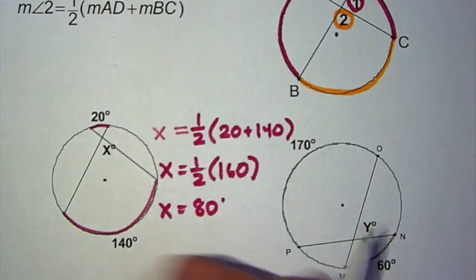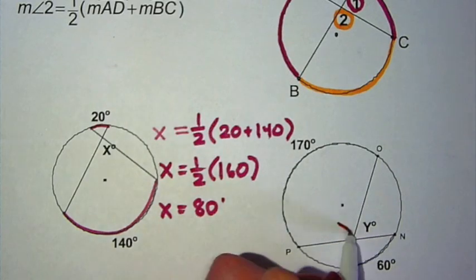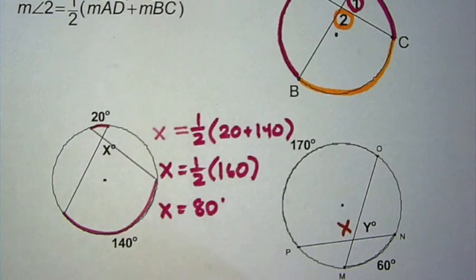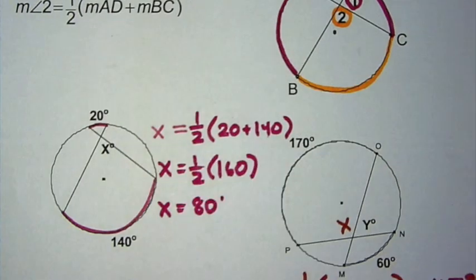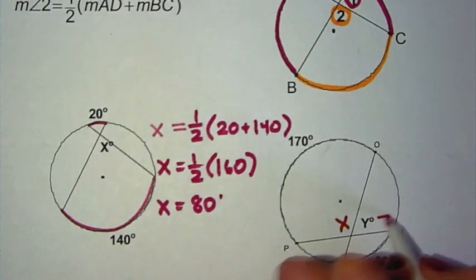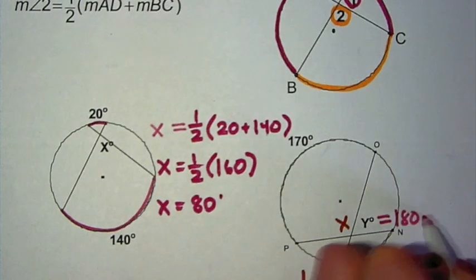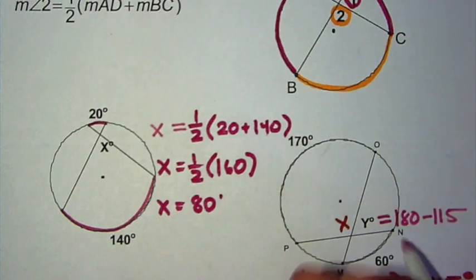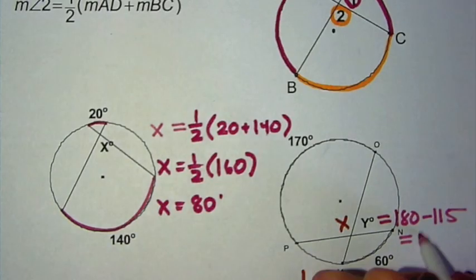On the next example, we're looking for y. But we can't find y yet because we don't have intercepted arcs for y. So let's look at an angle next to it. Let's call it x. x is going to be equal to one-half the intercepted arc. So one-half 170 plus 60, which is one-half 230. So x is equal to 115 degrees. Now x and y are a linear pair. So that means that y is going to be 180 minus 115. So that's 65 degrees.